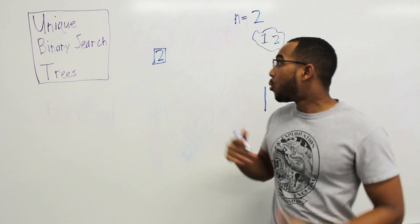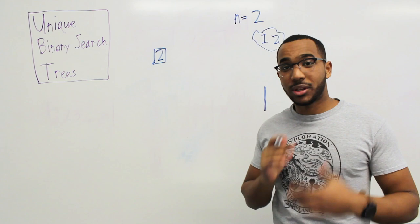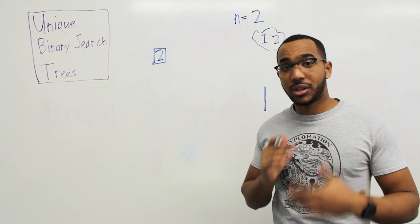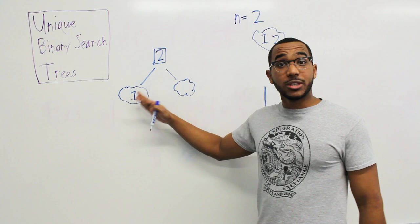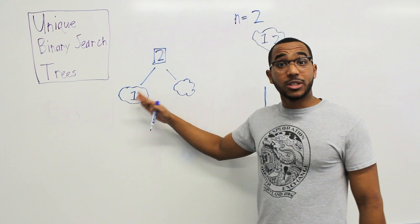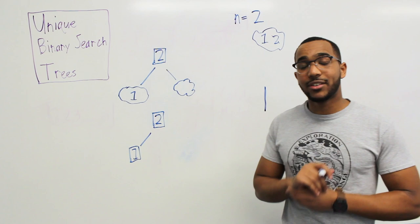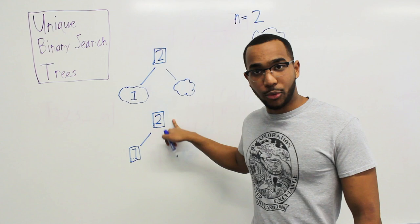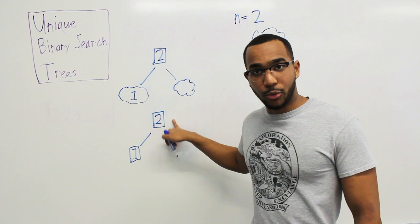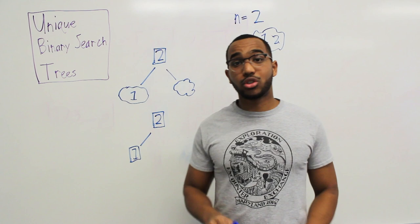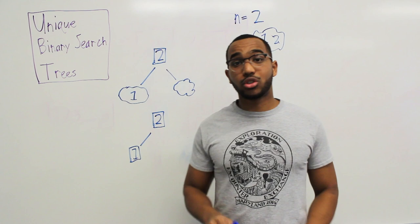Now let's plant 2 as the root. The right subtree has no possibilities — I can only place the 1 in the left subtree. So we get exactly one tree with 2 at the root. That gives us our answer: 2 structurally unique binary search trees for n=2, which is the second Catalan number.